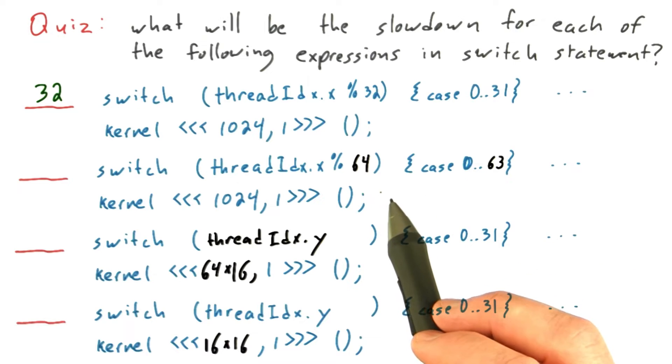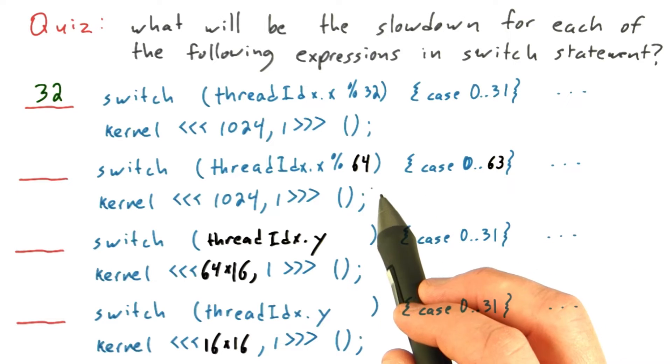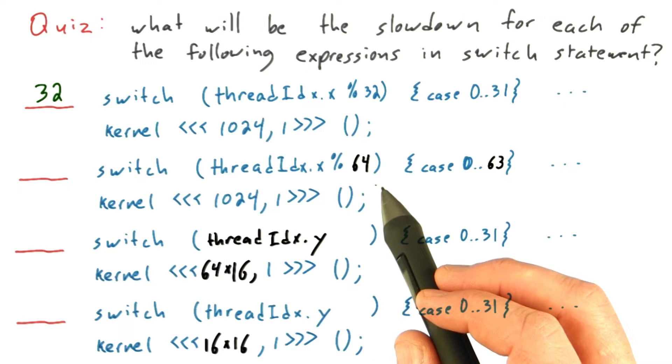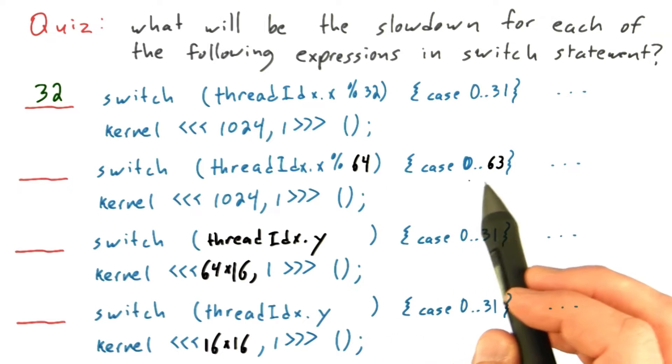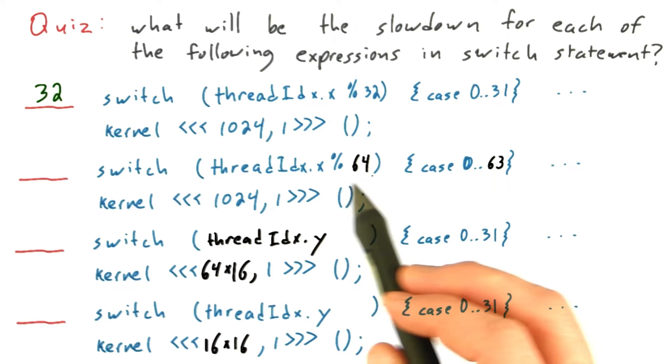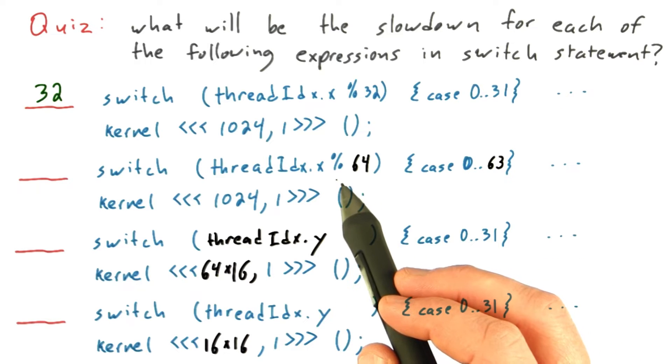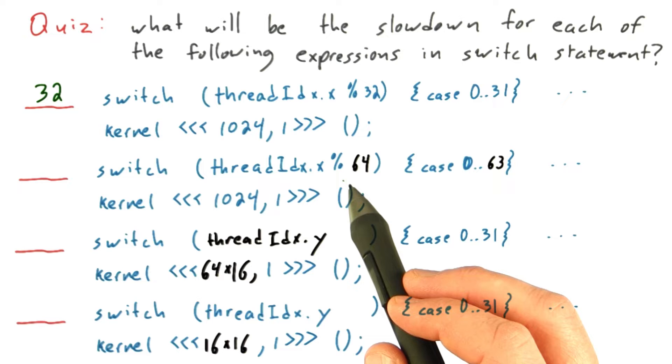The thing to understand about this first example is that the maximum slowdown is 32. There are only 32 threads in a warp, so no matter how many cases there are, no matter how many ways you can branch, you're not going to branch more than 32 ways in a single warp because there's only 32 threads in that warp.